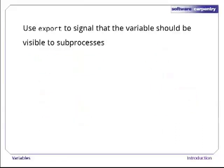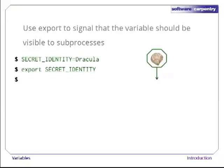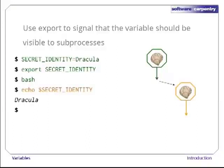If we really want the shell to pass a variable to the processes it creates, we must use the export command. Let's try the secret identity example again. After giving secret identity a value, we give the shell the command export secretidentity. Note that it's not export $secretidentity with a dollar sign — if we typed that, the shell would expand secret identity and our export command would actually be export Dracula, which would do nothing because there's no variable called Dracula. Now let's run a new shell and type echo $secretidentity. There's our variable.